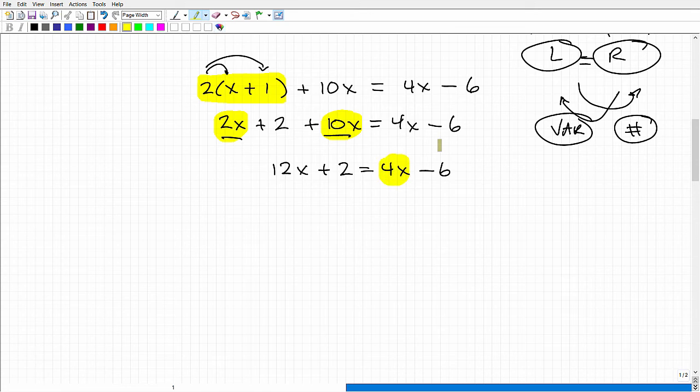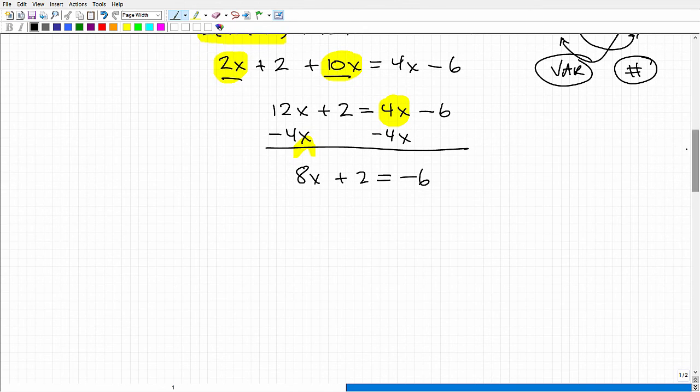So let's go ahead and start with the variables first. So I have this 4x on the right-hand side. I want to move it over to the left-hand side. So the way I'm going to do that, I'm going to subtract the 4x over here. But if I do subtraction on the right-hand side, I'm going to have to do it over here on the left-hand side. So this is going to be 8x plus 2 is equal to negative 6. So I just moved my 4x over to the left-hand side. And now I just want to move all my numbers over to the right-hand side. So I'm going to subtract 2 from both sides of the equation like so. And I'm going to get 8x is equal to negative 8.